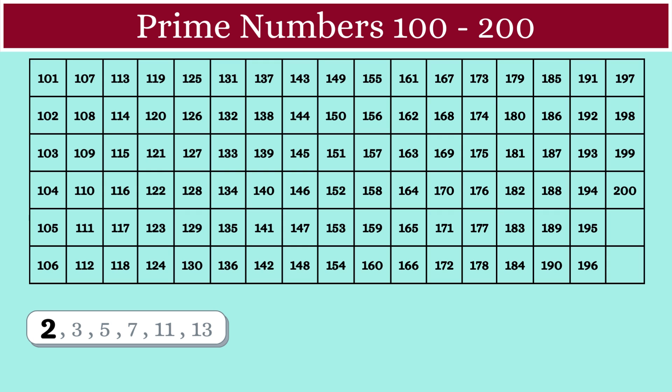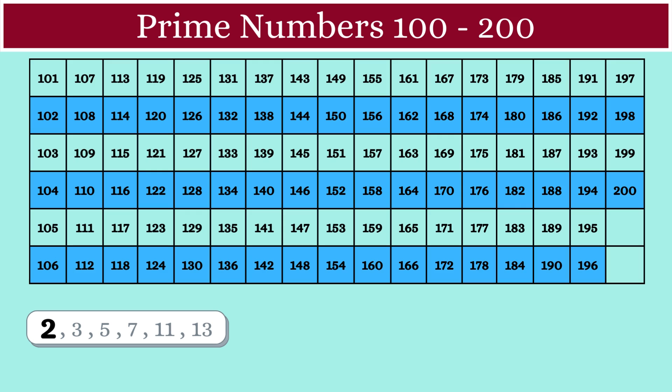All the even numbers in our table are multiples of 2, so they will be marked as composite numbers.